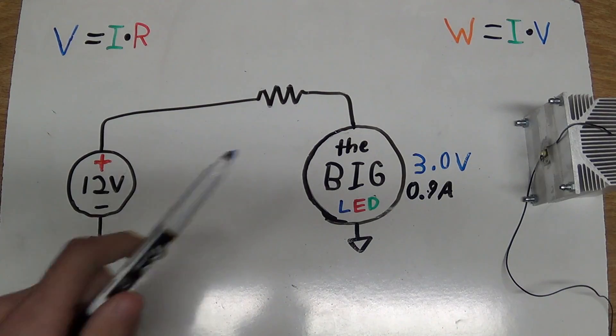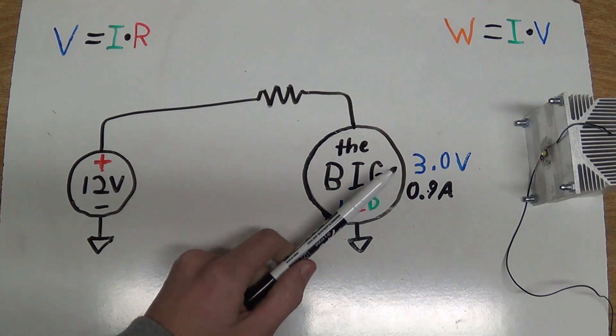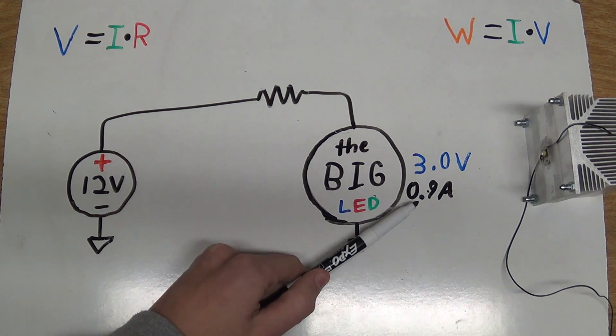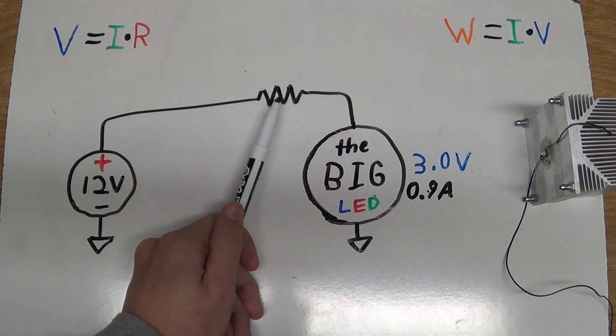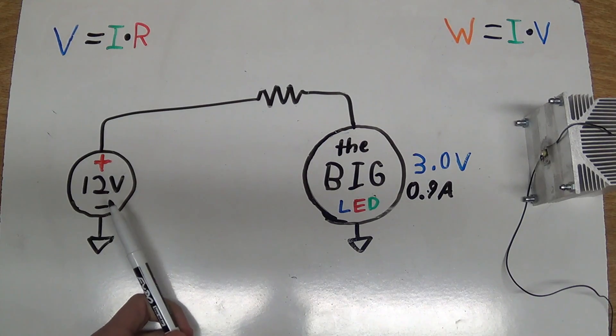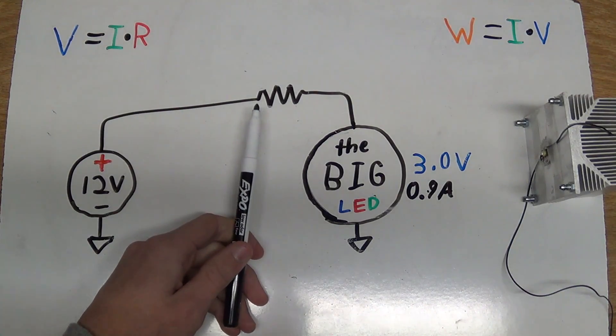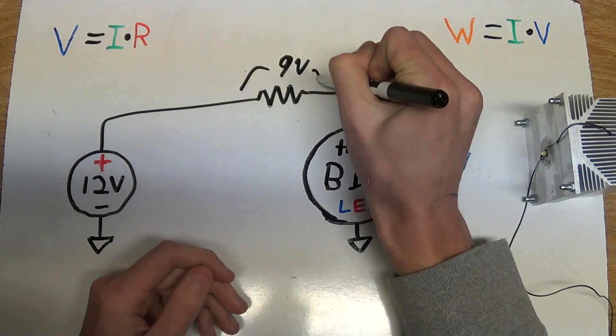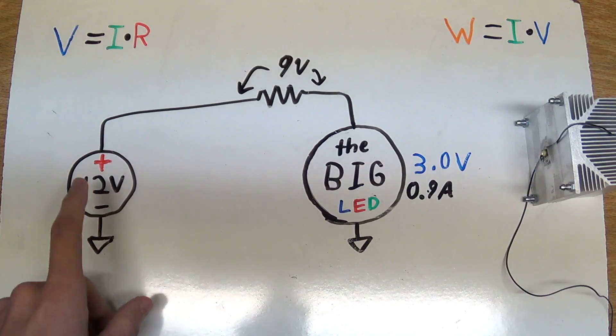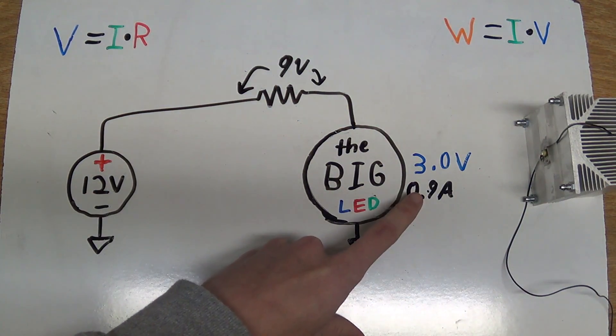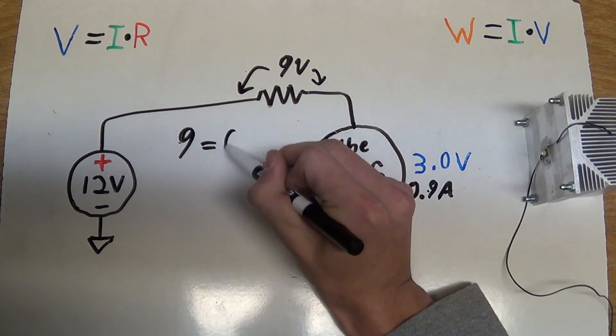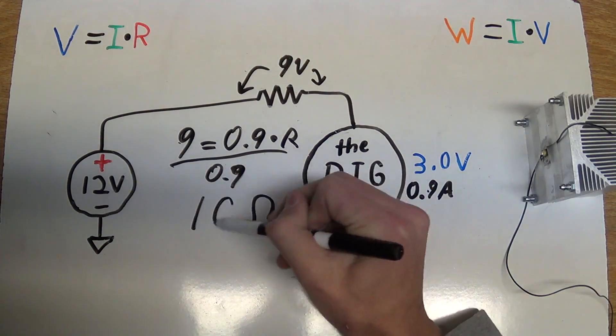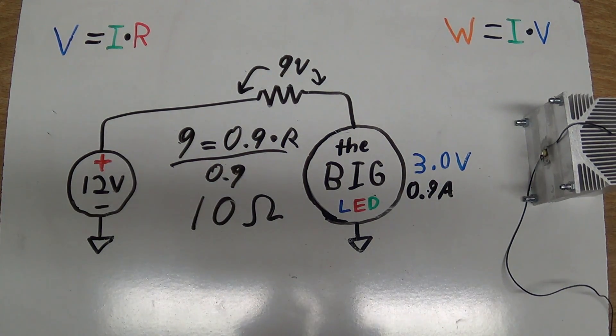Alright, this time we have a very similar situation, but I've changed out my LED for a much larger single LED, which requires 3 volts at 900 milliamps, or 0.9 amps. Now here's the resistor, and we have the 12 volt power supply over here. So this resistor has to drop 9 volts across it, in order to drop the voltage from 12 volts to 3 volts. Now doing ohm's law again, we can see that clearly we're going to need a 10 ohm resistor for this. So, let's build up this circuit in real life and see what happens.